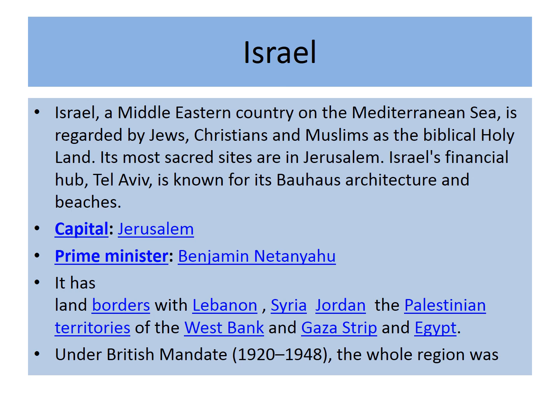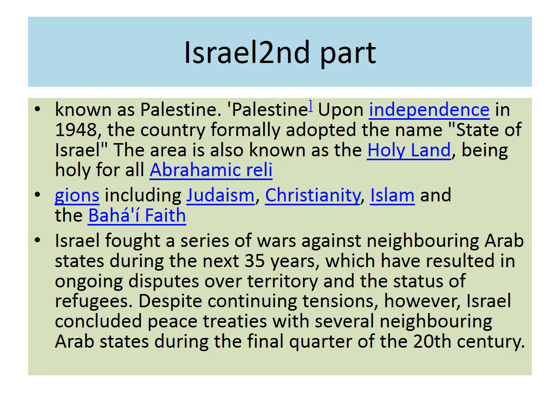When Israel was under the British Mandate from 1920 to 1948, the whole region was known as Palestine. Upon independence in 1948, the country formally adopted the name State of Israel. The British controlled Palestine until Israel became independent in 1947–1948. Israel is the only Jewish country and Jews all over the world think of Israel as the spiritual home.